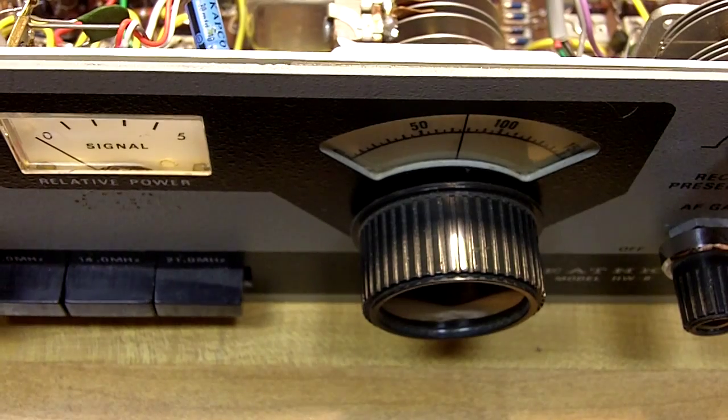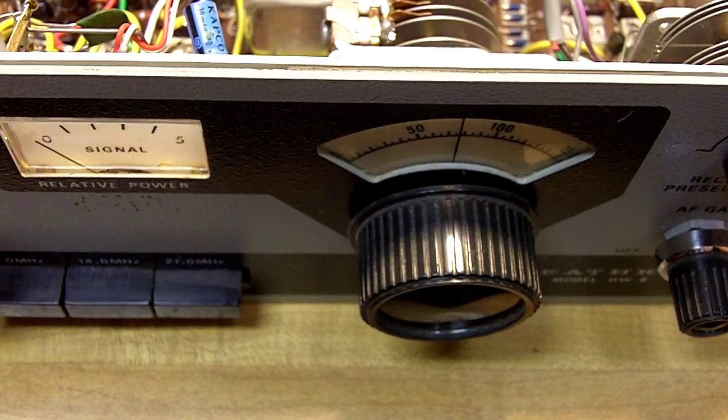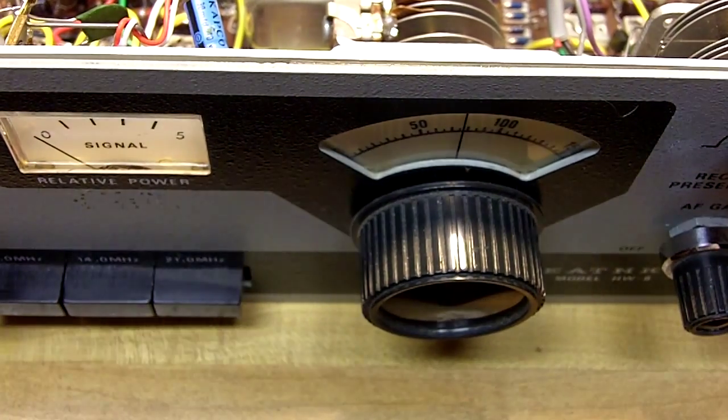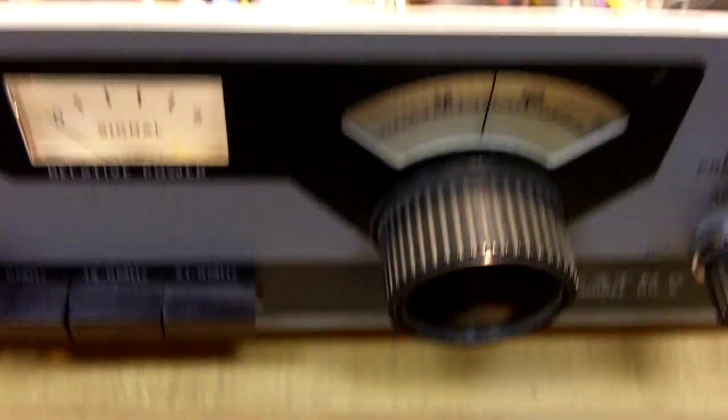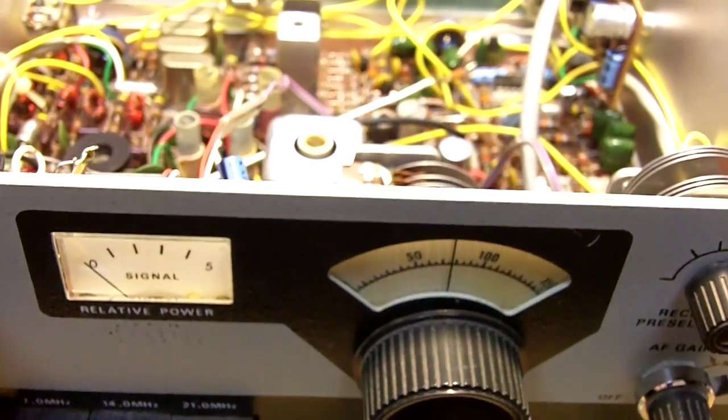Hello YouTubers, Larry here, WD0AKX, and I have a Heathkit HW8 here, a QRP radio made for CW only, and I'm going to do a modification to try to improve the receive sensitivity somewhat on it.